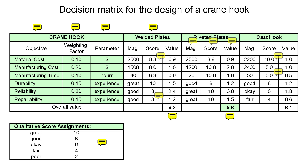This part of the design process requires a lot of work because of the extensive justification data which has to accompany each value reported in the decision matrix. If you can't support the values reported in the evaluation matrices with solid justification data, you'll quickly lose credibility as a design engineer.